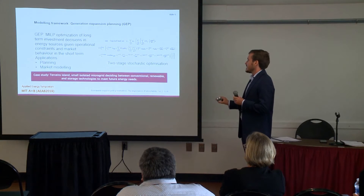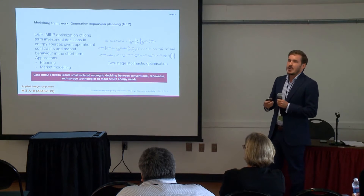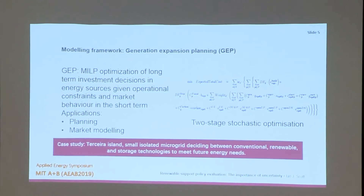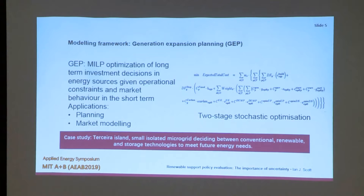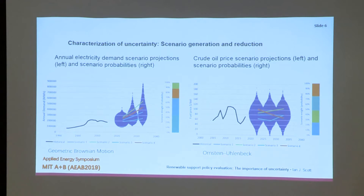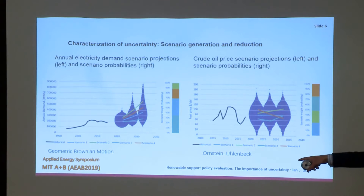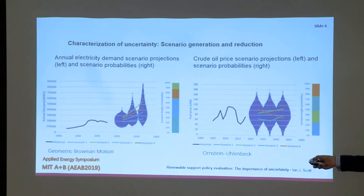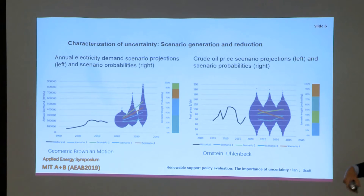It's a two-stage generation expansion planning model. Because we're going to have a lot of uncertainty, we're looking at a small but representative case study — a small microgrid making expansion decisions relating to conventional, renewable, and storage technologies. We use scenario generation and reduction. On the left we have historical demand; we fit a geometric Brownian motion, generate a whole bunch of future potential scenarios, then pick a representative set of scenarios — those four scenarios each with a probability. The low one is actually much more probable than the high extreme one.